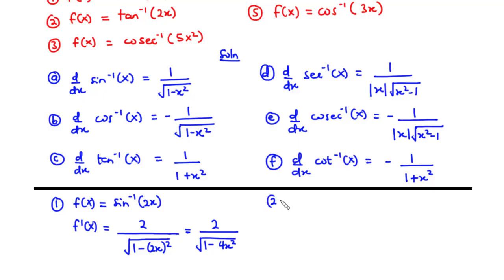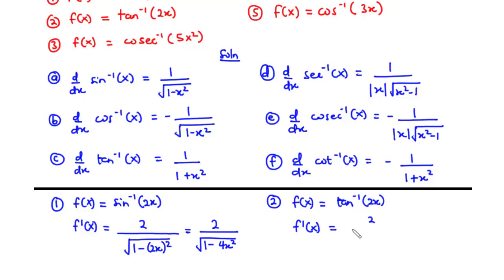For question 2, we have f of x equal to tan inverse of 2x. For f prime of x, we use formula C. We differentiate 2x with respect to x, giving us 2. Then we substitute 2x in place of x in the denominator: 1 plus 2x all squared. So f prime of x equals 2 divided by 1 plus 4x squared.